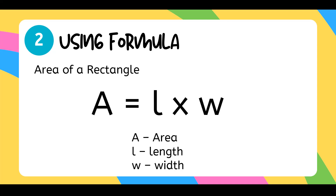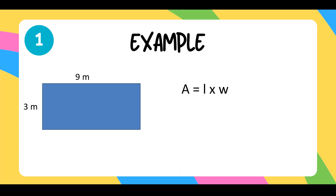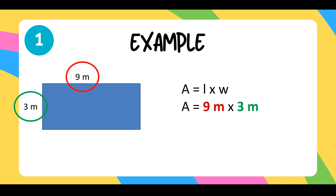Area is equal to length multiplied by the width. Example number 1: we have a 9 meters by 3 meters rectangle. Let's write the formula — Area is equal to length times the width. Substituting the values, the length is 9 meters and the width is 3 meters. So area is equal to 9 meters times 3 meters, which gives us 27 square meters. Remember to always use square units when writing your unit of measurement for area.